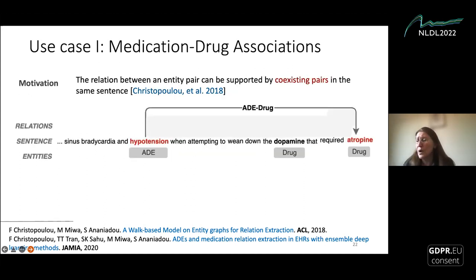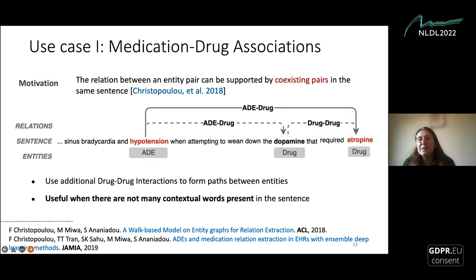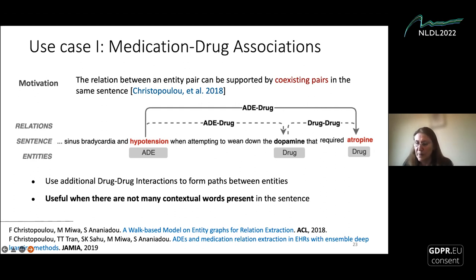For example, the relation between hypotension and atropine is not evident when first reading. However, when we use intermediate associations between hypotension and dopamine, we can also leverage dopamine and atropine to infer the relation between hypotension and atropine. This is quite useful when we don't have enough contextual words present in the sentence. In this setting, we can use additional drug-drug interactions, even though they're not annotated, to boost the ADE-drug relation detection.